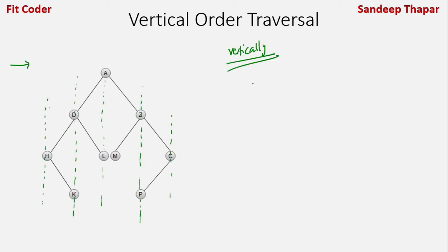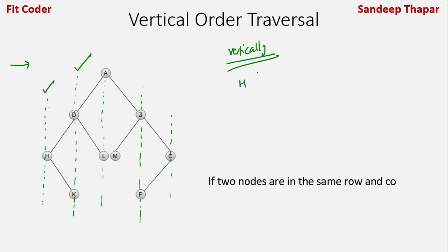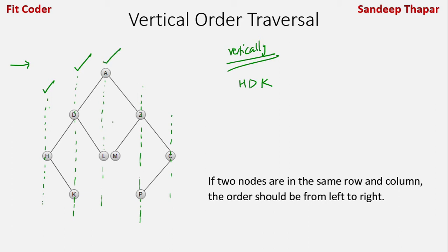In the first column we have vertex H. Then in the second column we have two vertices D and K. In the third column we have three vertices A, L, and M. In the next we have two vertices Z and P, and in the last column we have vertex C. So this is the vertical order traversal — we print each column vertically from top to bottom, starting from the leftmost and going towards the rightmost.